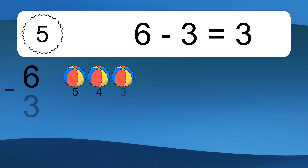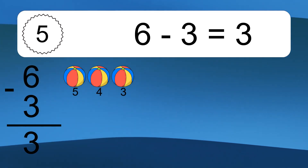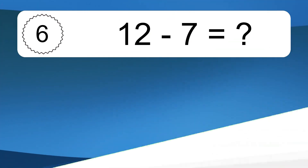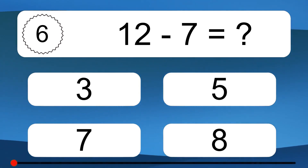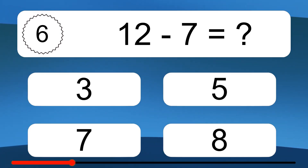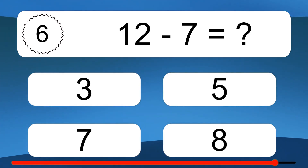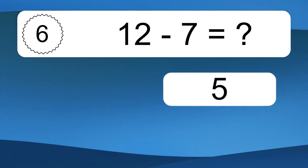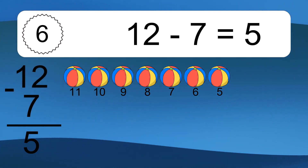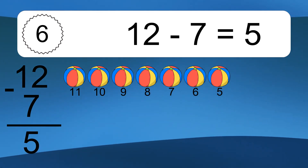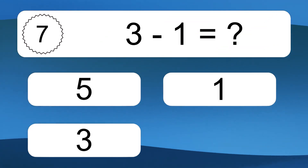6 minus 3 equals 3. Let's count it: 5, 4, 3. 12 minus 7 equals what? Let's count it: 11, 10, 9, 8, 7, 6, 5.